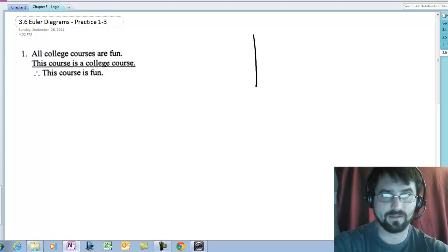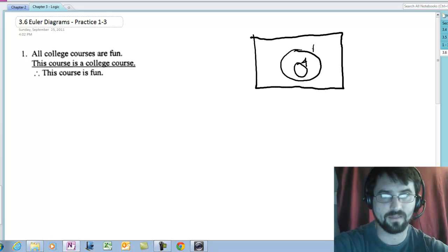Our pictures look like this for Euler diagrams. If we want to draw all A's are B's, then we put all the A's inside the B's. This is all A's are B's.